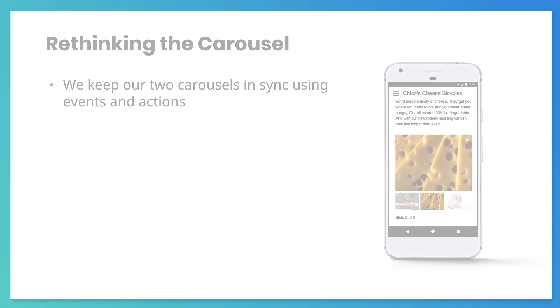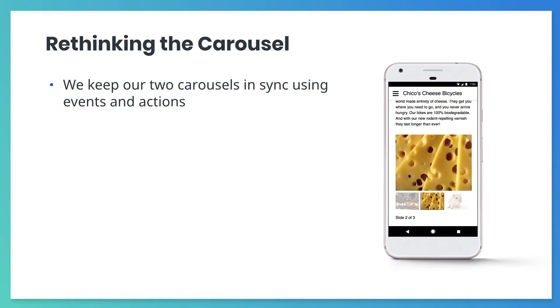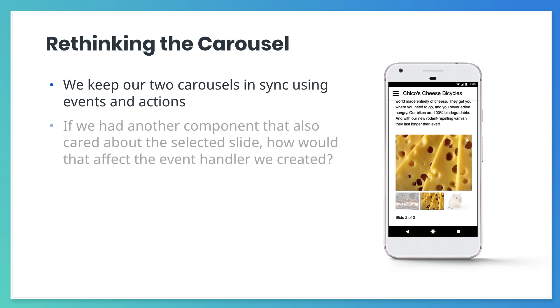In the previous course, we built two image carousels — one with larger images and one with thumbnails. We synchronized these carousels with events and actions. When the slide was changed in either carousel, we used a single action to update the other carousel.